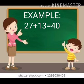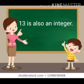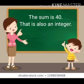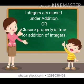Take another example. 27 plus 13 is equal to 40. Here, 27 is an integer and 13 is also an integer. Their sum is 40, which is also an integer. That means when we add two integers, their sum is also an integer. So integers are closed under addition, or the closure property is true for addition of integers.